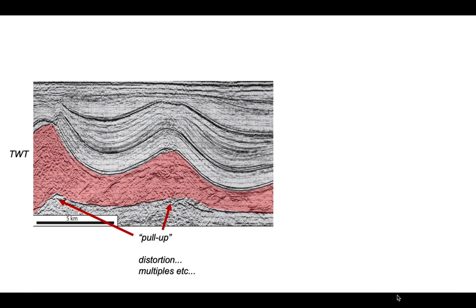Coming back to our image from the North Sea, we can see that beneath the areas of thick salt, the base of the salt has been pulled up — it's a distortion. The reality would have a smoother, perhaps even horizontal, surface beneath this salt dome. You can also see that the image beneath the salt dome is distorted.